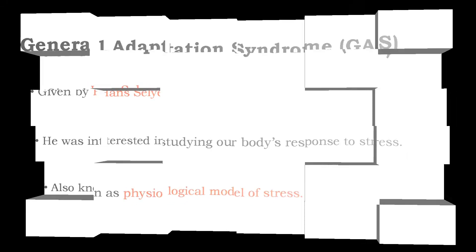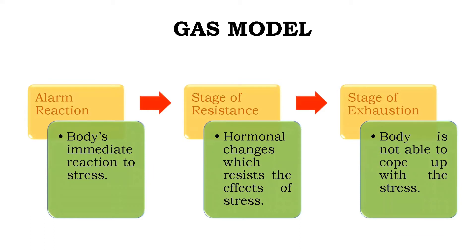The GAS model consists of three stages. The first stage is the Alarm Reaction, the second is the Stage of Resistance, and the third is the Stage of Exhaustion. These are the three stages a person goes through when experiencing stress. The Alarm Reaction is the body's immediate reaction to stress — it wakes the person up and makes them realize there is a stressful situation. It is essentially the body's alarm or warning to that person.